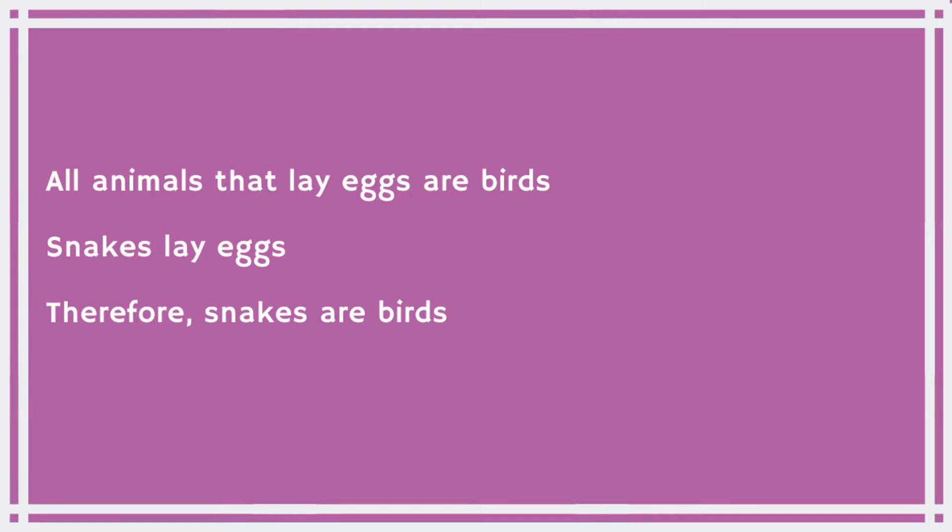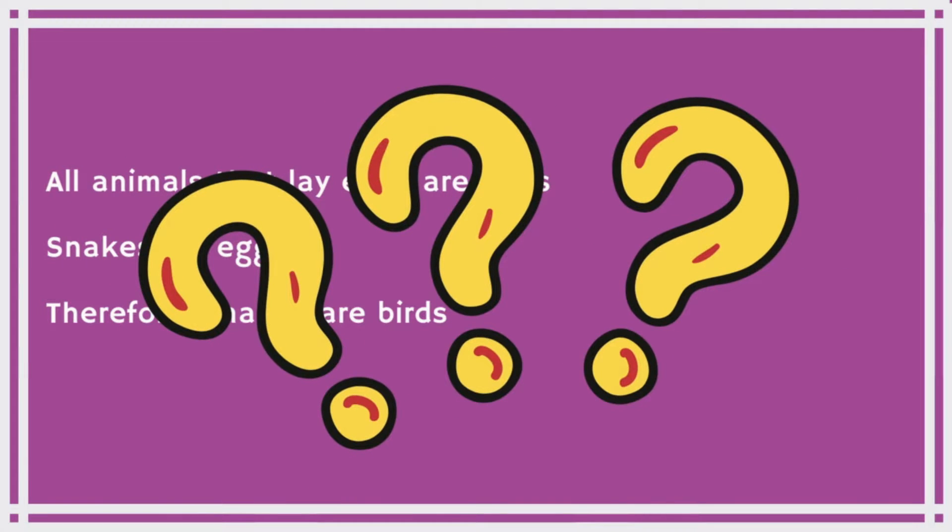Deductive reasoning can go wrong if the premise you start with is false — obviously the conclusion will also be wrong. For example: 'All animals that lay eggs are birds, snakes lay eggs, therefore snakes are birds.' We obviously know that's not true. The premise 'all animals that lay eggs are birds' is false — fish also lay eggs — so because the premise is false, the conclusion is also false.